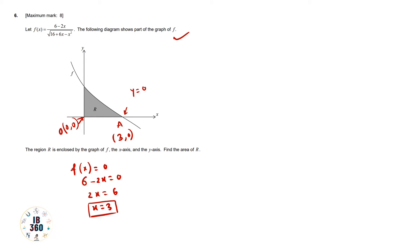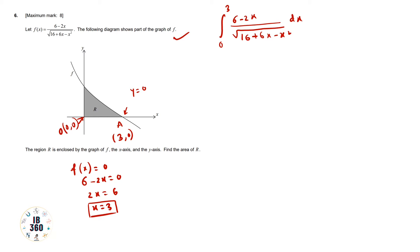Now it is easy to find the area under the curve using integration. We integrate from 0 to 3: the integral of (6 - 2x) / √(16 + 6x - x²) dx.